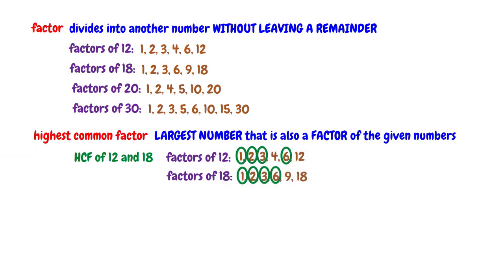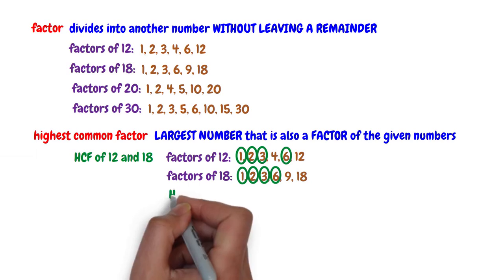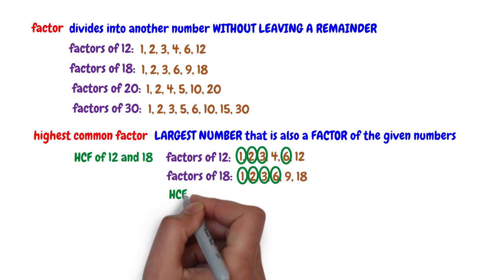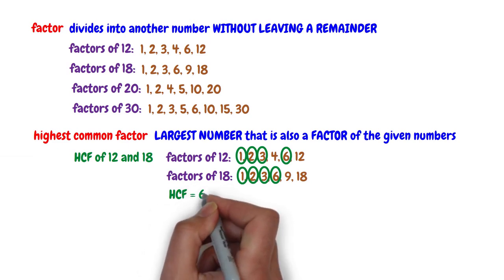The largest number among the common factors is the highest common factor. In this case, the largest number is 6. So, the highest common factor of 12 and 18 is 6.